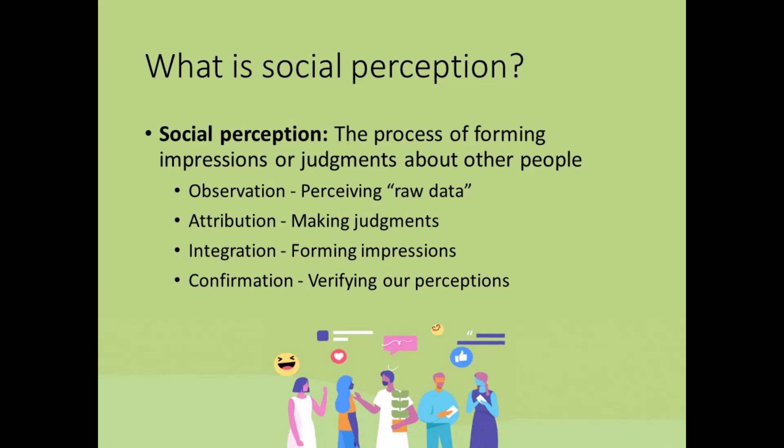Observation is the perceiving of raw data — information about the person's characteristics and behavior, as well as the situational cues. Attribution is making judgments, and sometimes errors, about the causes of people's behavior.